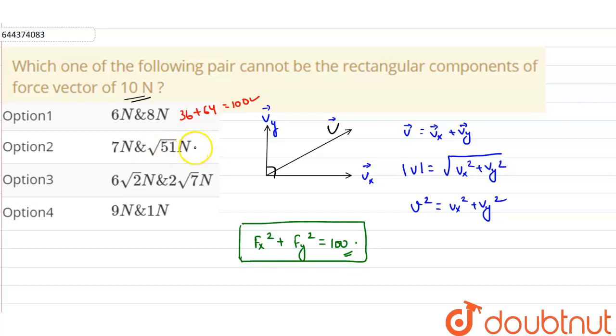Second one is 7 newton and under root 51 newton, so this will be 49 plus 51, again it is 100, satisfying the relation.